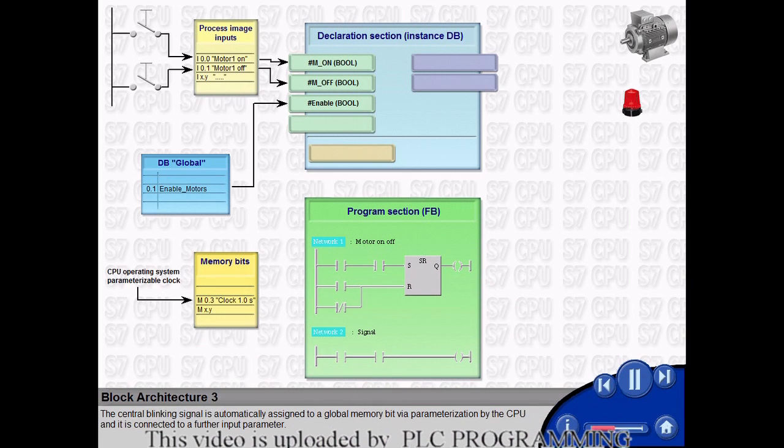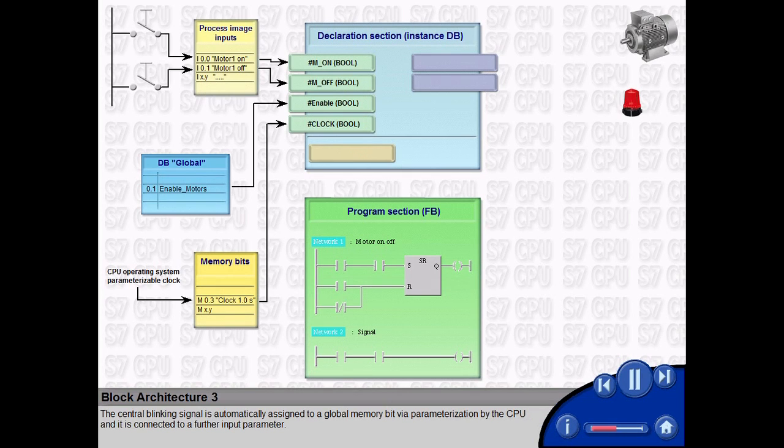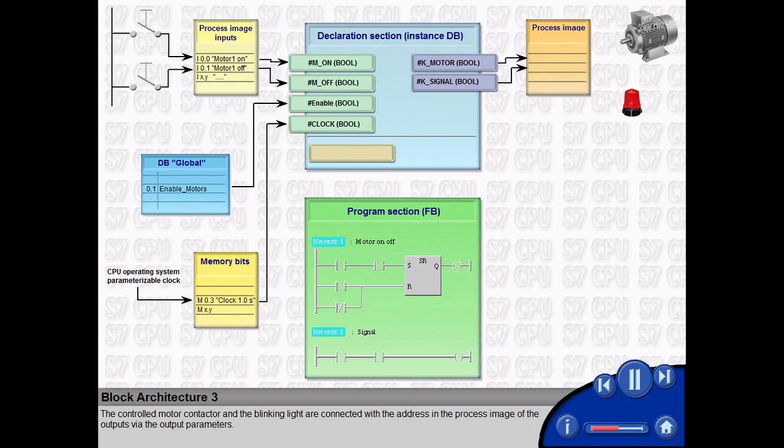The central blinking signal is automatically assigned to a global memory bit. The controlled motor contactor and the blinking light are connected with the address in the process image of the outputs via the output parameters.